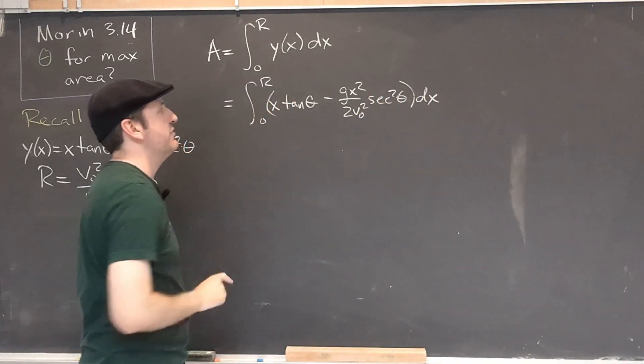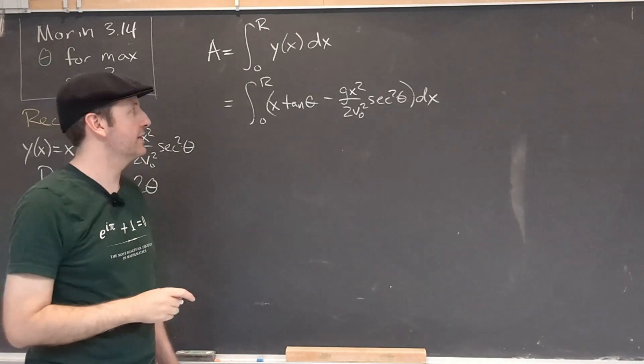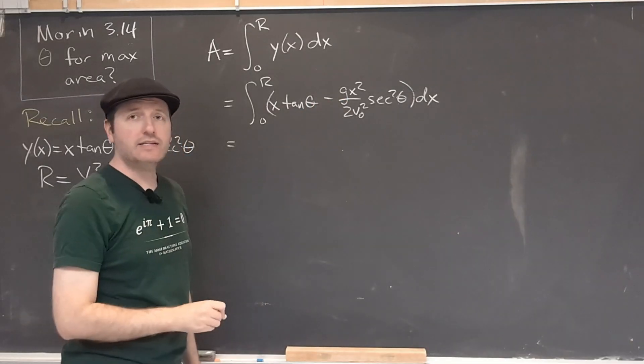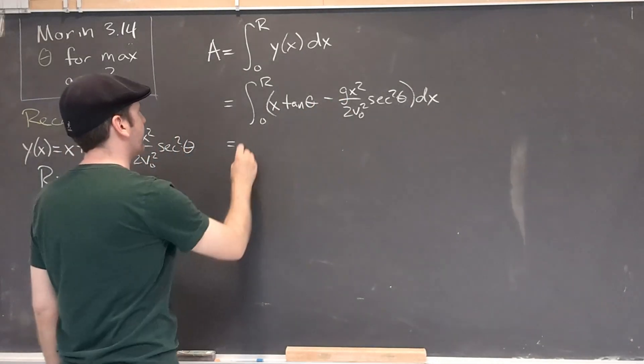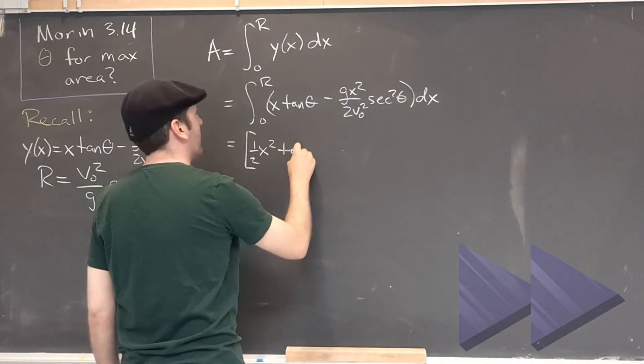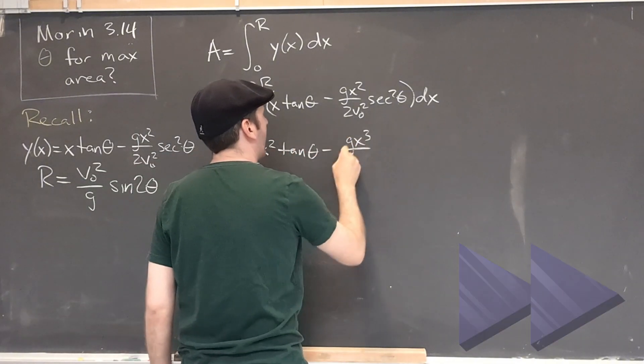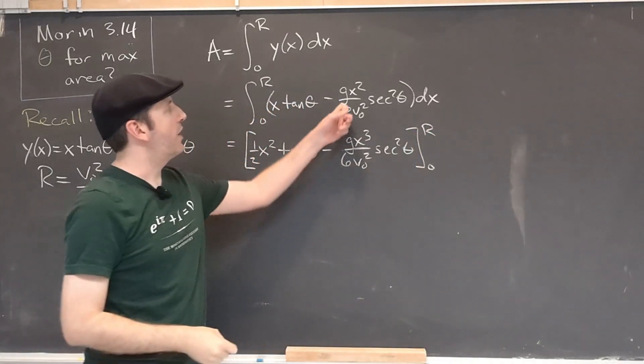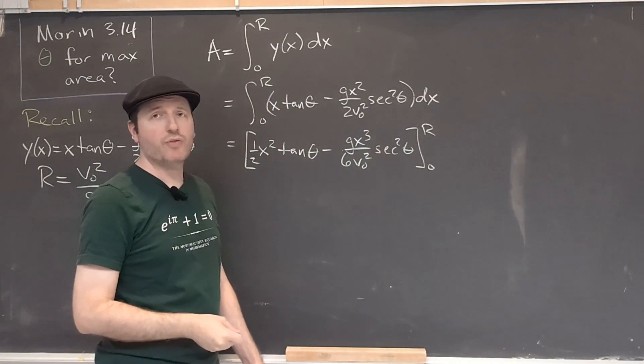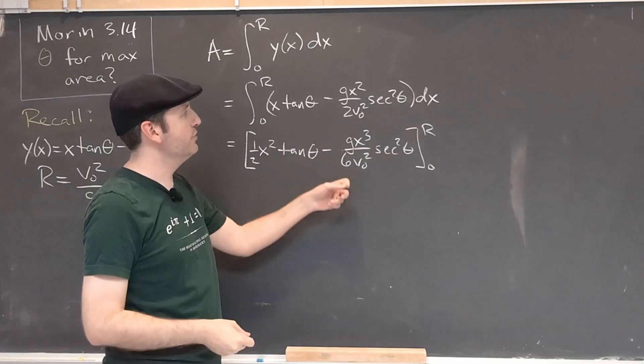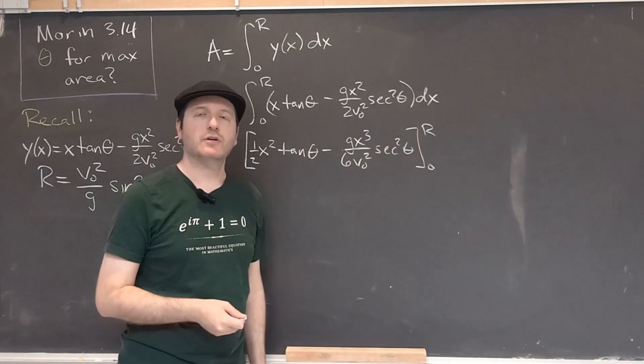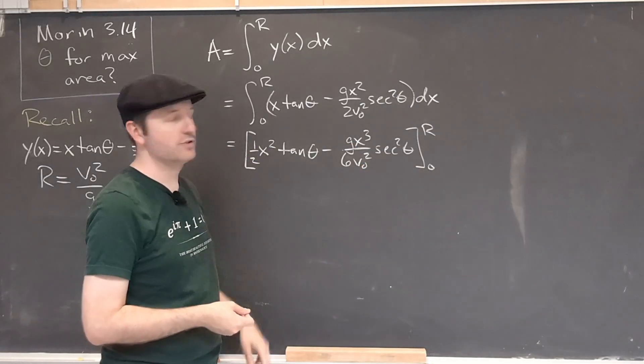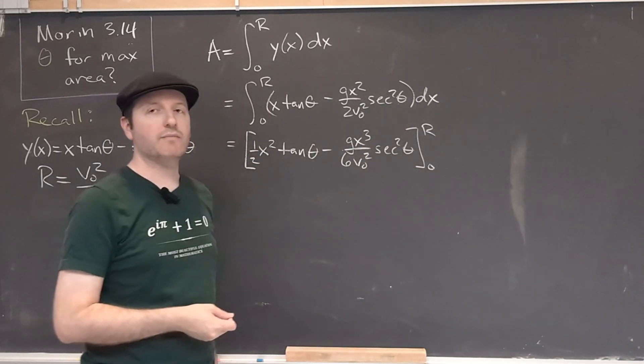The x integrals are actually quite easy because this is just a polynomial. Our antiderivative of x squared gave us one-third x cubed, which I combined with a 2. And now we just have to use the fundamental theorem of calculus to plug in our bounds. 0 gives nothing because both of these will just be 0. So I'm just going to plug in my R.